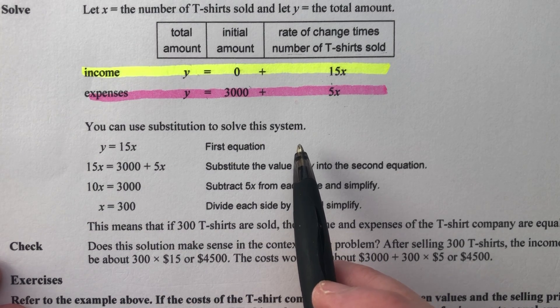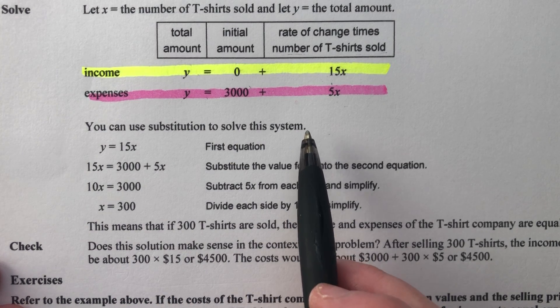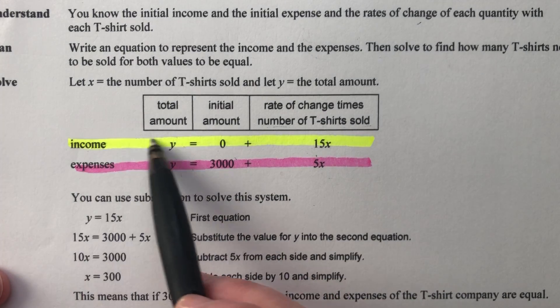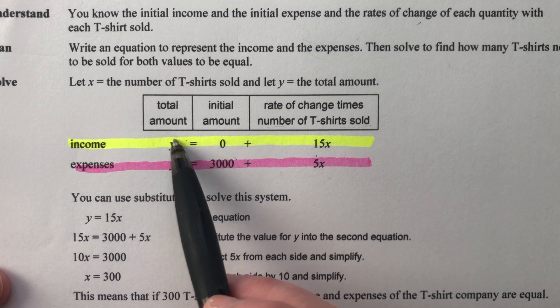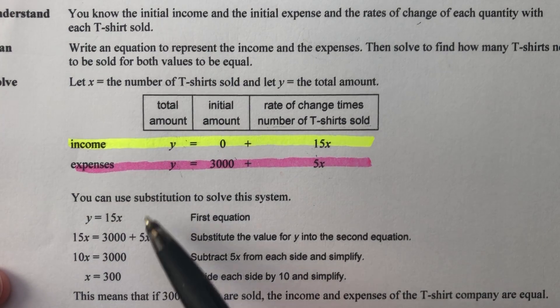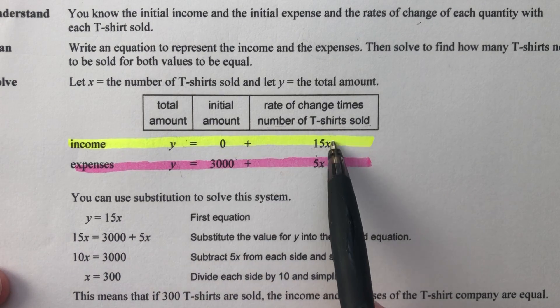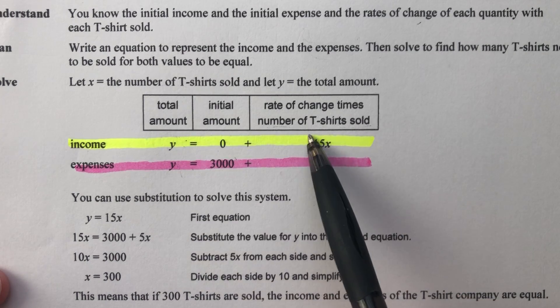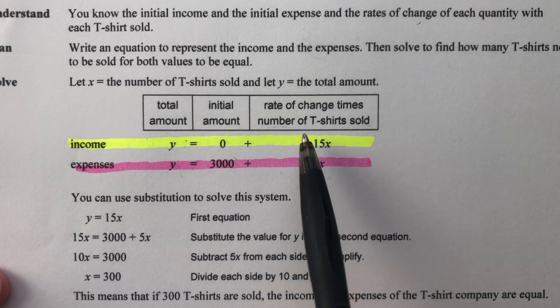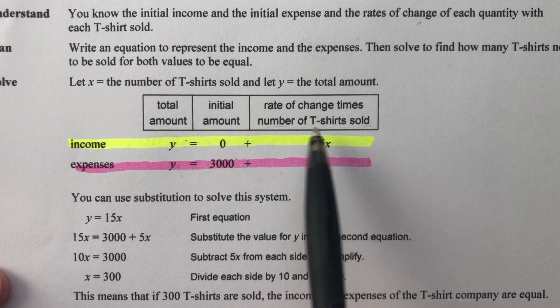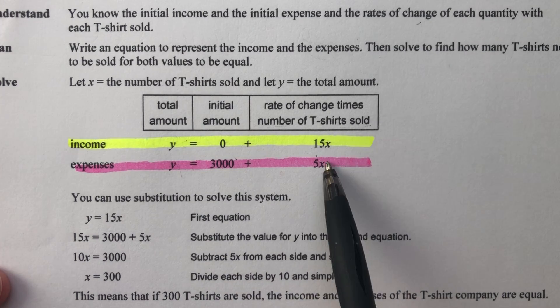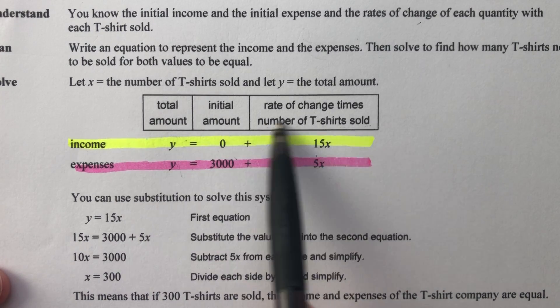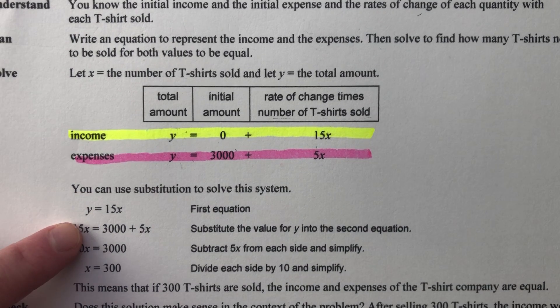You can use substitution to solve the system. How can we use substitution? Well, in both of these equations, whether it's income or expenses, what we're making or what we're paying out, we use Y. Y represents the total amount. It's the same Y. So whether that Y is equal to this or that same Y is equal to this doesn't change. So if Y equals this, this has to be the same thing as this. So you can either substitute this up here in place of this Y or you can substitute this down here in place of this Y. Doesn't matter because either way, you're just setting these two things equal to each other. So that's what they're doing here.